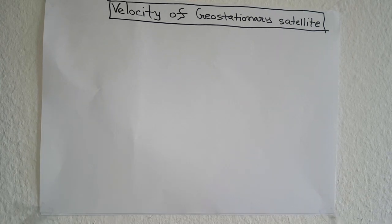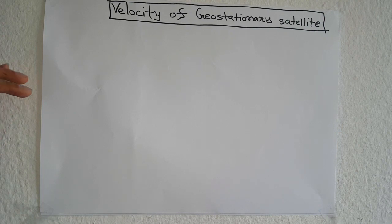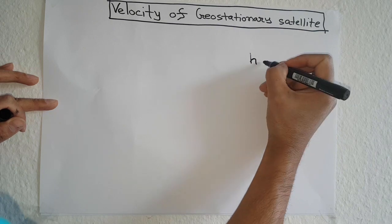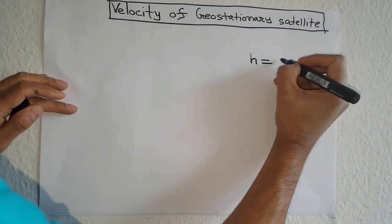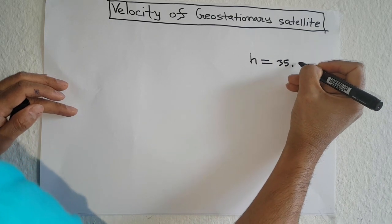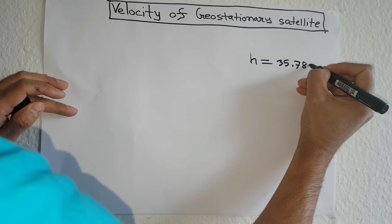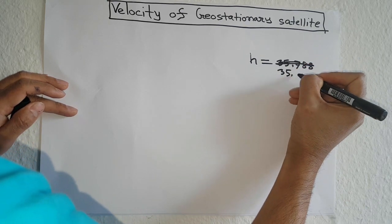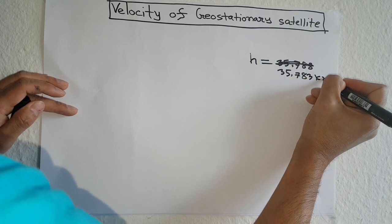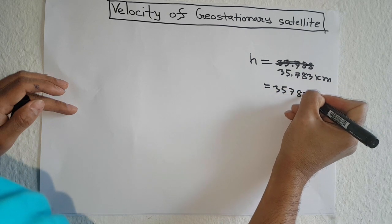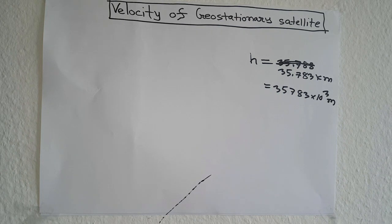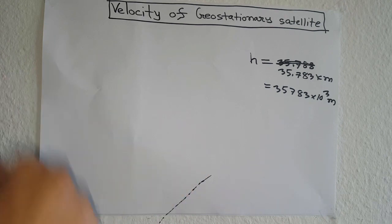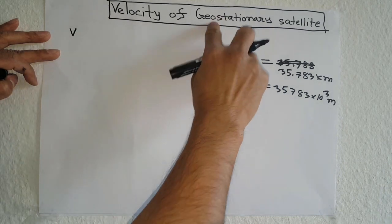Hello, welcome back in another interesting episode. In this episode, I will calculate the velocity of a geostationary satellite. In the last video, I calculated the height of a geostationary satellite from above the ground, which is equal to 35,783 kilometers, or 3.5783 times 10 to the power 4 meters. The link is given in the description. In this video, I will calculate the velocity of a geostationary satellite.